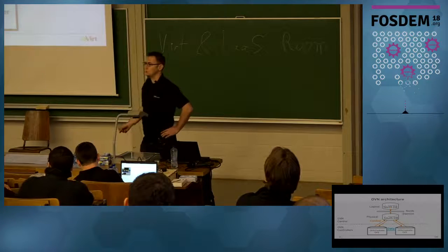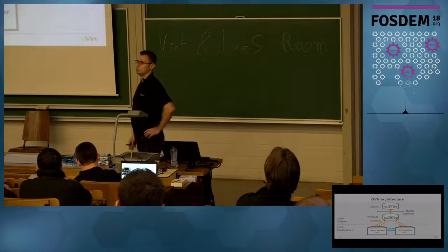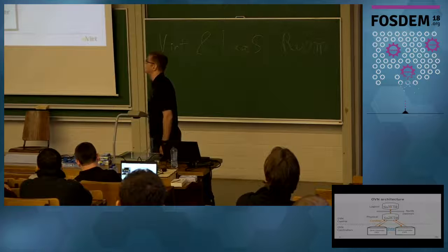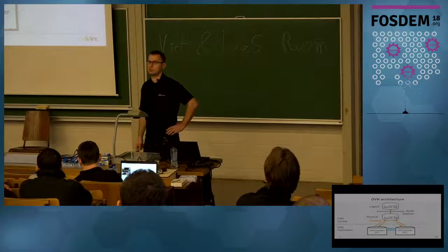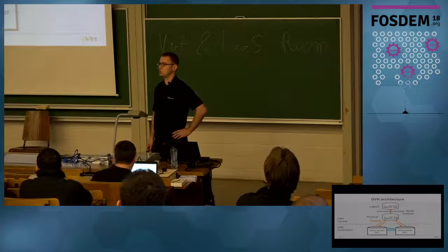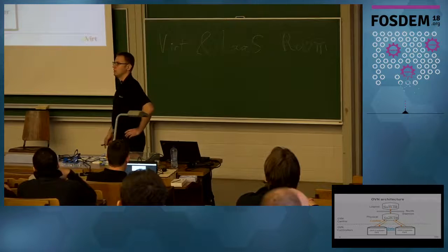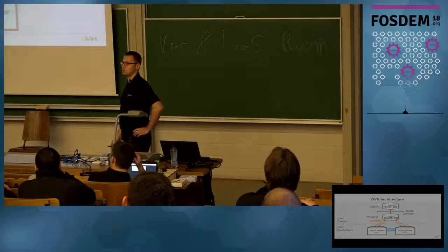The OVN architecture. Architecturally, OVN consists of two layers. We have the OVN central and the distributed OVN controller. OVN central consists of two databases: the north database, which holds the logical state of the system — the state that we desire — and the south database, which holds the physical state of the system.